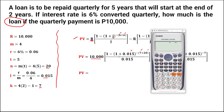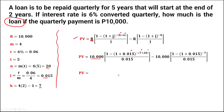To find the present value, we first need to find the value for the first group. Compute what is inside the parentheses: 1 minus 1.015 to the power of negative (7 plus 20), which is negative 27, then divide by 0.015, then multiply by 10,000. This equals 220,676.17.